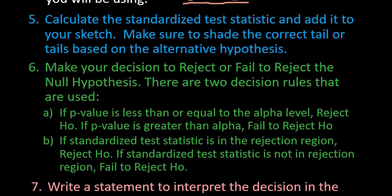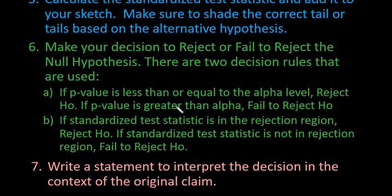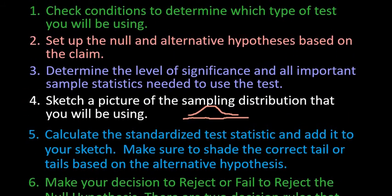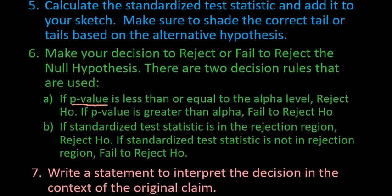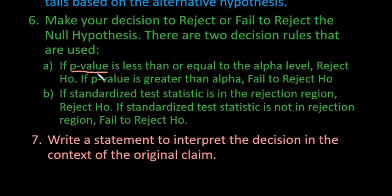Then you're going to make your decision to reject or fail to reject the null hypothesis. There are two decision rules that can be used. If I'm using technology, then I always use the p-value. If your p-value is less than or equal to your alpha level — that level we decided upon in step three — you're going to reject the null hypothesis. If your p-value is greater than your alpha, then you would fail to reject.